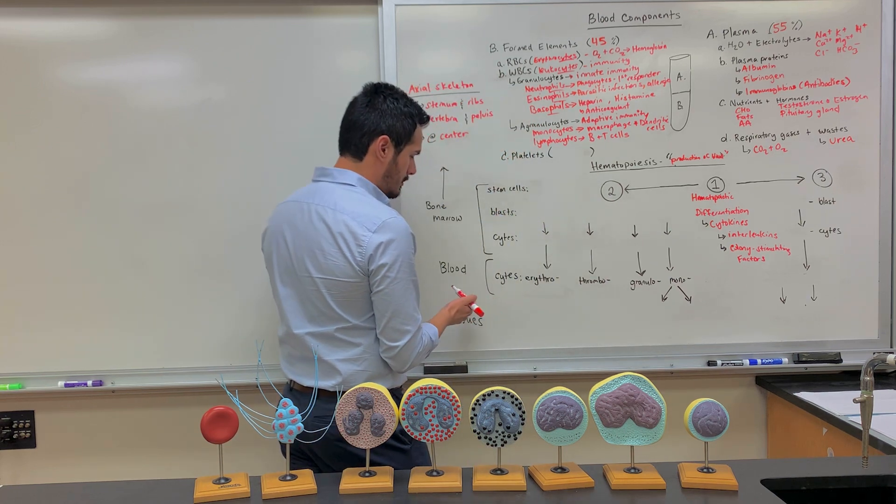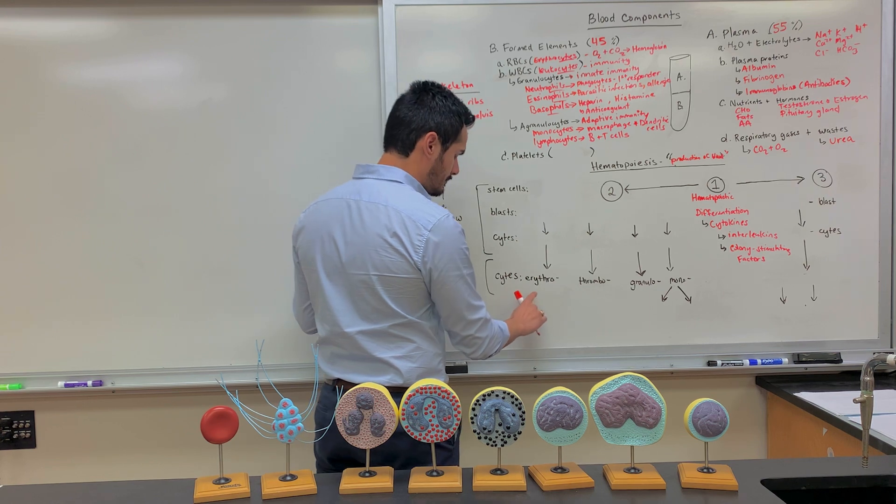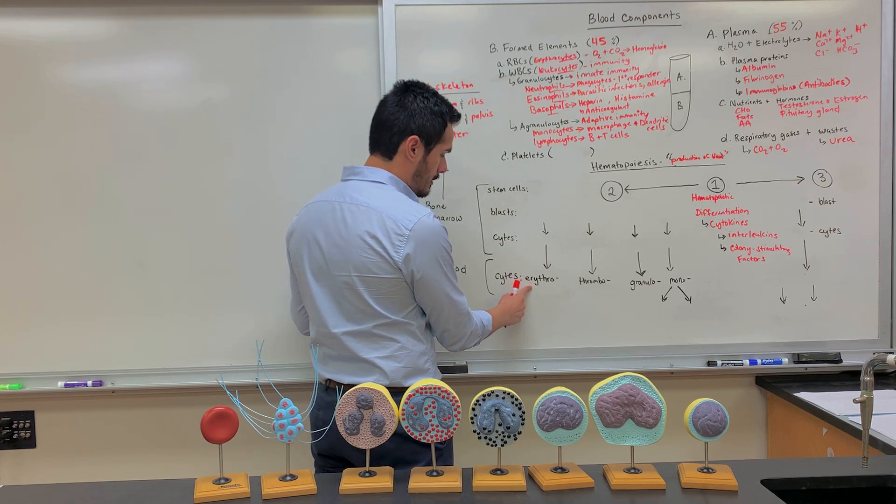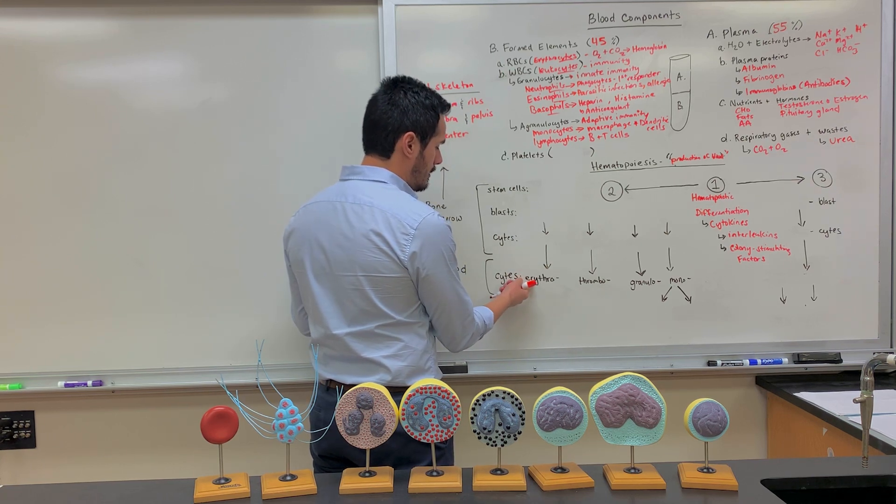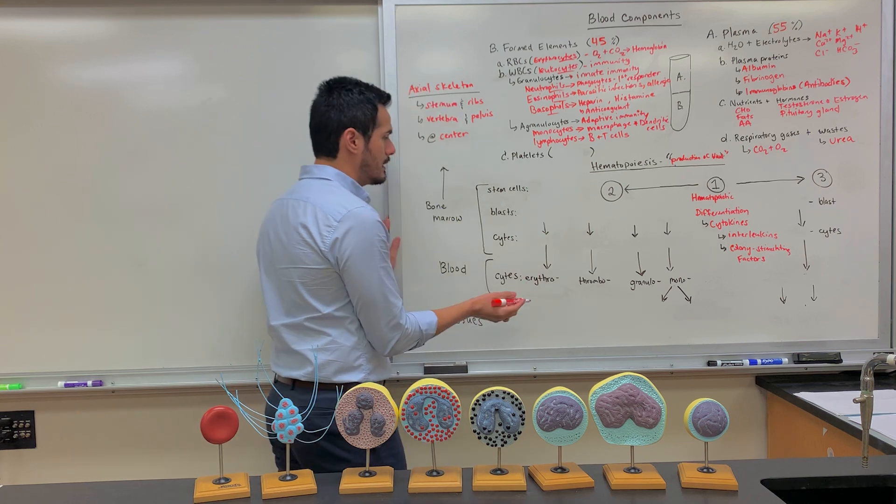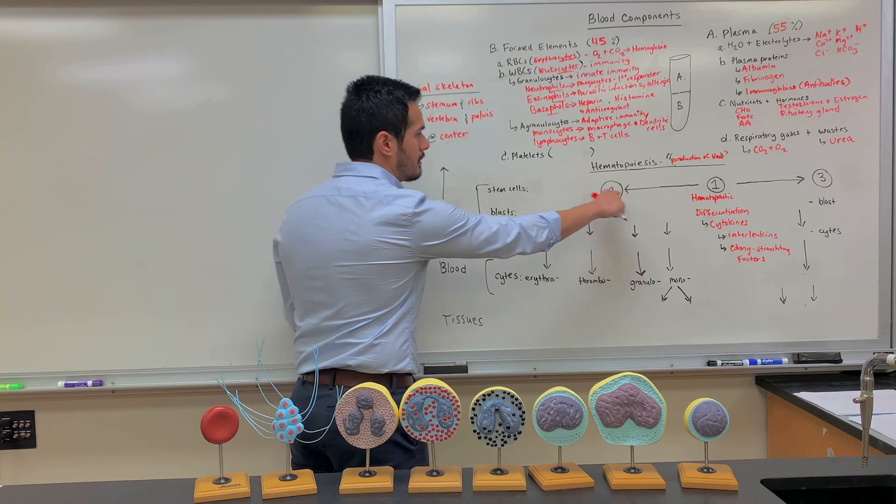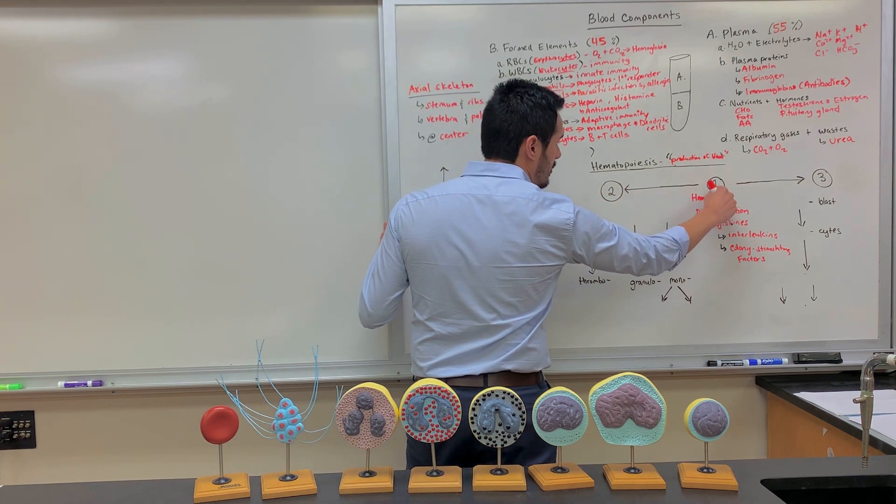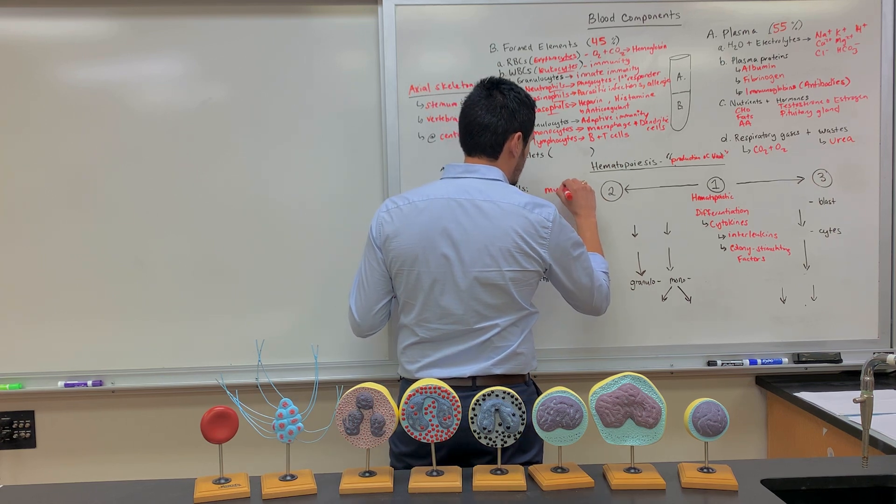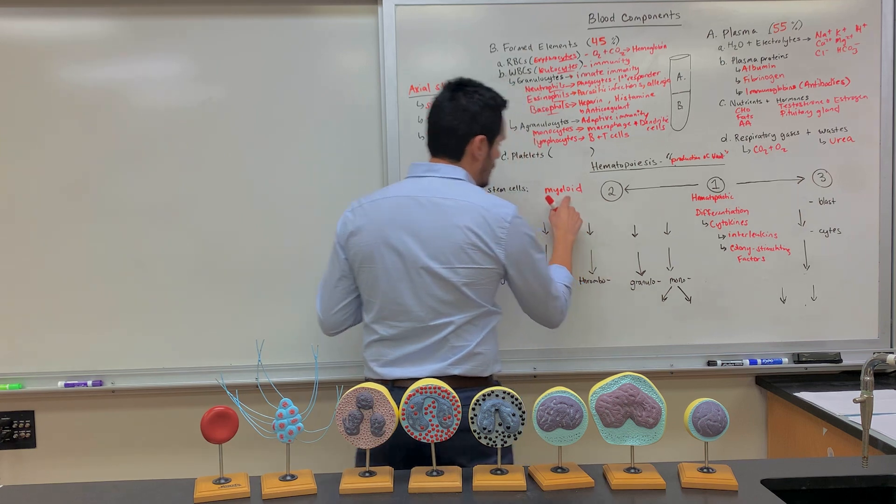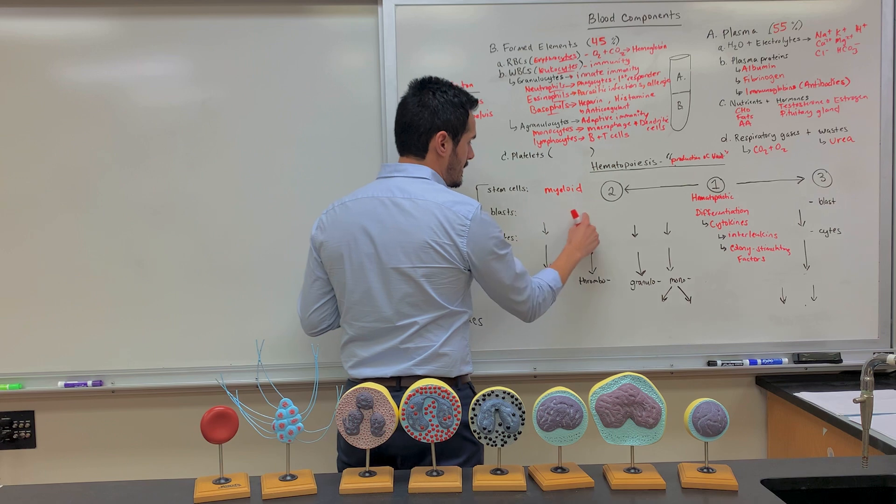So once again, erythrocytes, they are known as red blood cells. And how do they get to this point? So BLAST means build, and so this hematopoietic stem cell will differentiate into what's known as a myeloid stem cell. So this myeloid stem cell will further differentiate into these particular cell lines here.